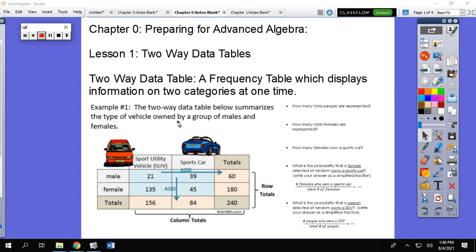So a two-way data table is a frequency table that displays information on not just one category, but two categories at a time. So down here in example one, there's a two-way data table that summarizes the type of vehicle owned by a group of males and females. So this data is broken down not only by what kind of vehicle they own, sports utility or sports car, but also by the gender of the owner.